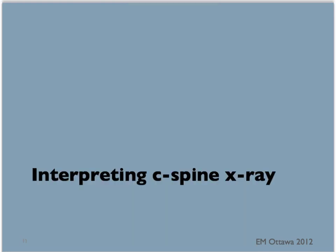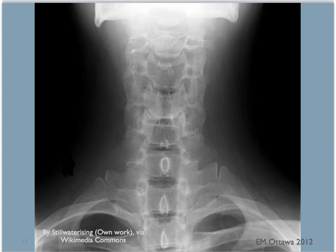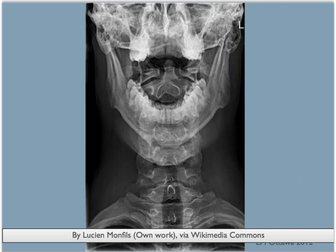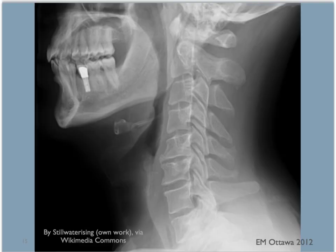If you decide to do an x-ray of the C-spine, how do you interpret it? Usually three images would be obtained: the AP view, the lateral view, and the open-mouth odontoid view. Of the three, the lateral view gives us the most information. To review the lateral C-spine x-ray, you want to ensure this is an adequate film — you need to be able to see from C1 down to the top of T1.